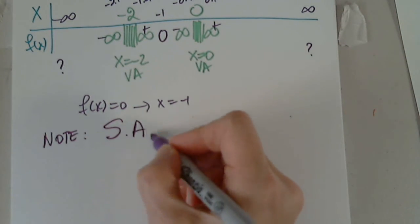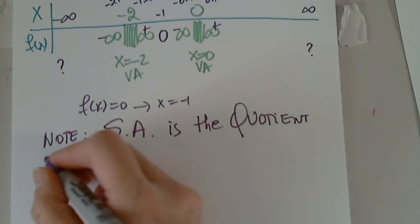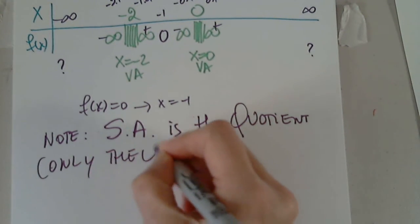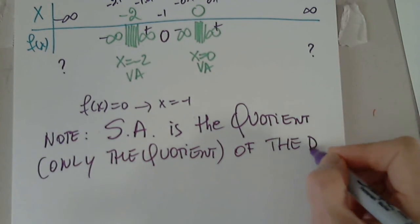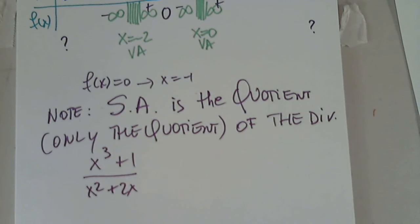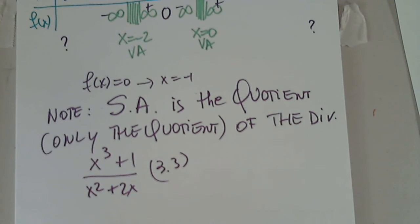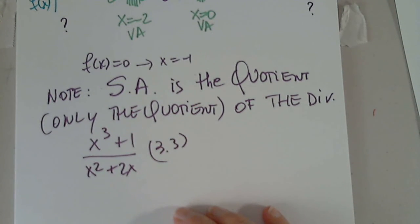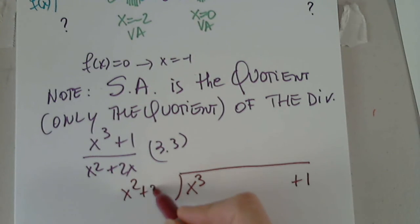Okay. How do I find the slant asymptote? Note. Slant asymptote is the quotient, only the quotient of the division. x to the third plus 1 over x squared plus 2x. And now you know what we did, section 3.3. For this. I cannot use the synthetic division. I can only use the long division. A lot of terms are missing. The term with x squared is missing. The term with x is missing. So plus 1. And I divide by x squared plus 2x.